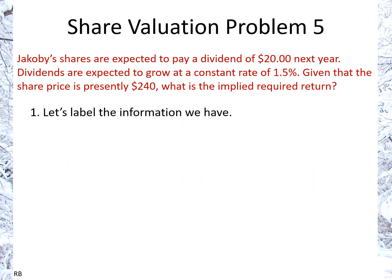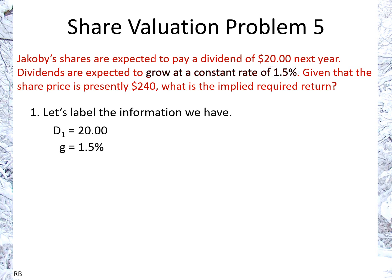Let's label the information we have. We're paying a dividend of $20 next year — it's a dividend and it says next year, so that is D1. That's why we use the subscripts for the equation. So D1 is $20. We have growth at a constant rate of 1.5%, so that's G. And we have a present share price of $240, that's P0.